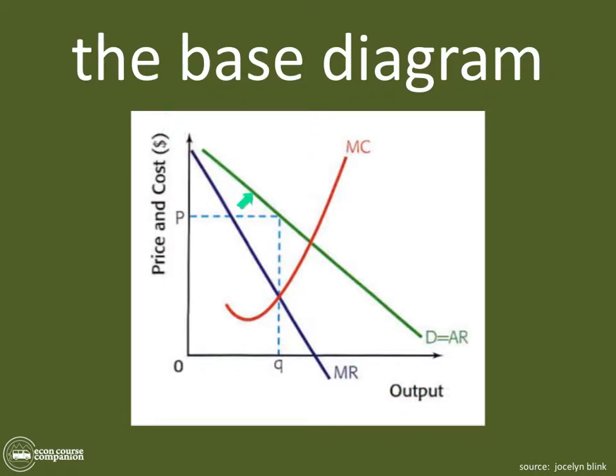Then what do we do? Come back and draw the demand curve, where demand equals average revenue. Then we draw the marginal revenue curve, which descends at twice the rate of average revenue. If you don't know why that's the case, check out some earlier videos. Then we come back and we draw the marginal cost curve.